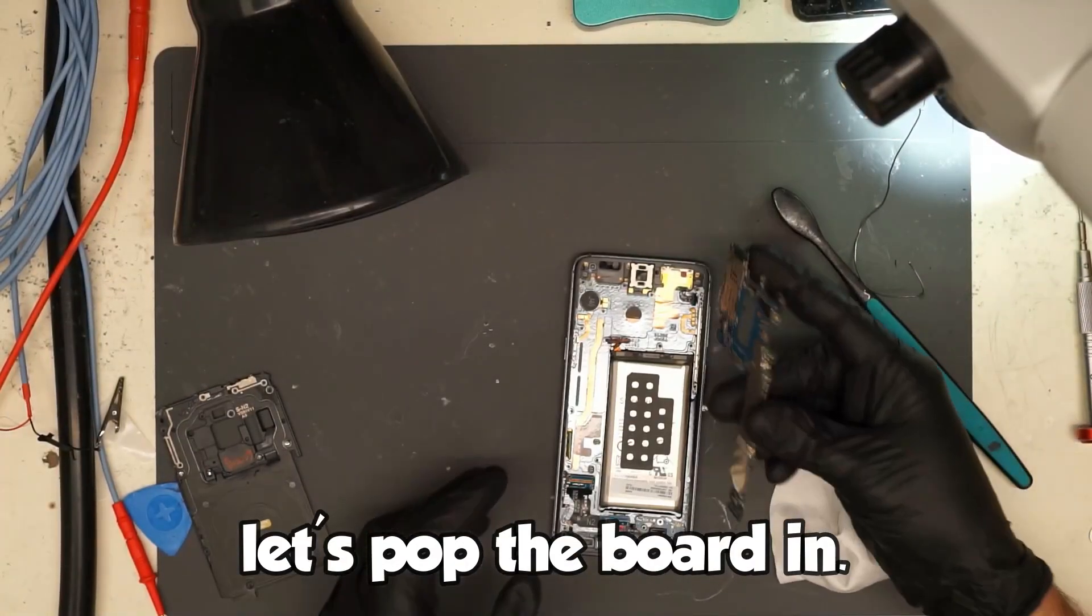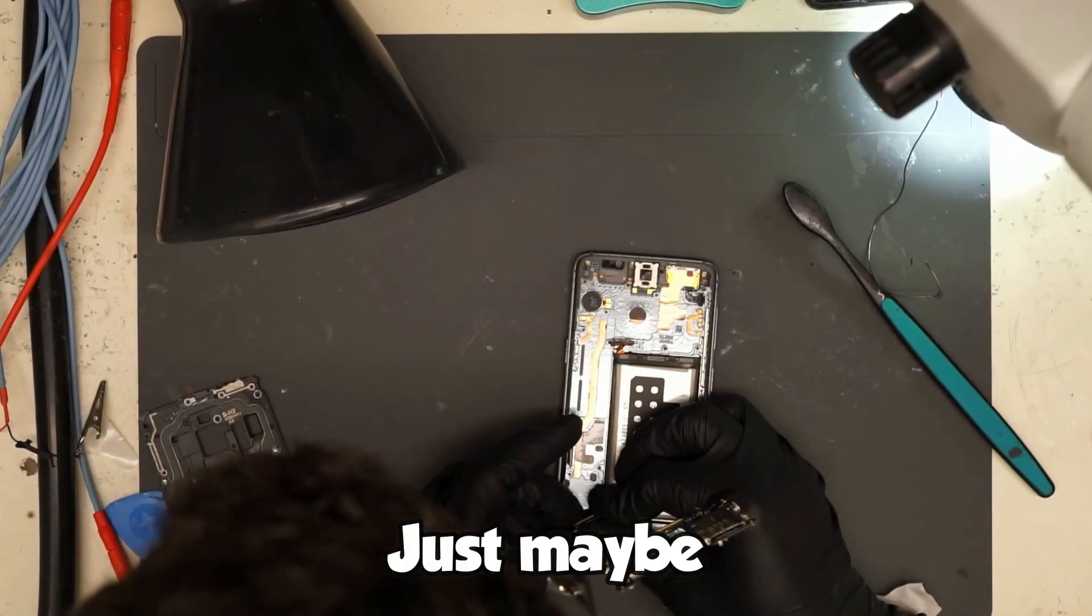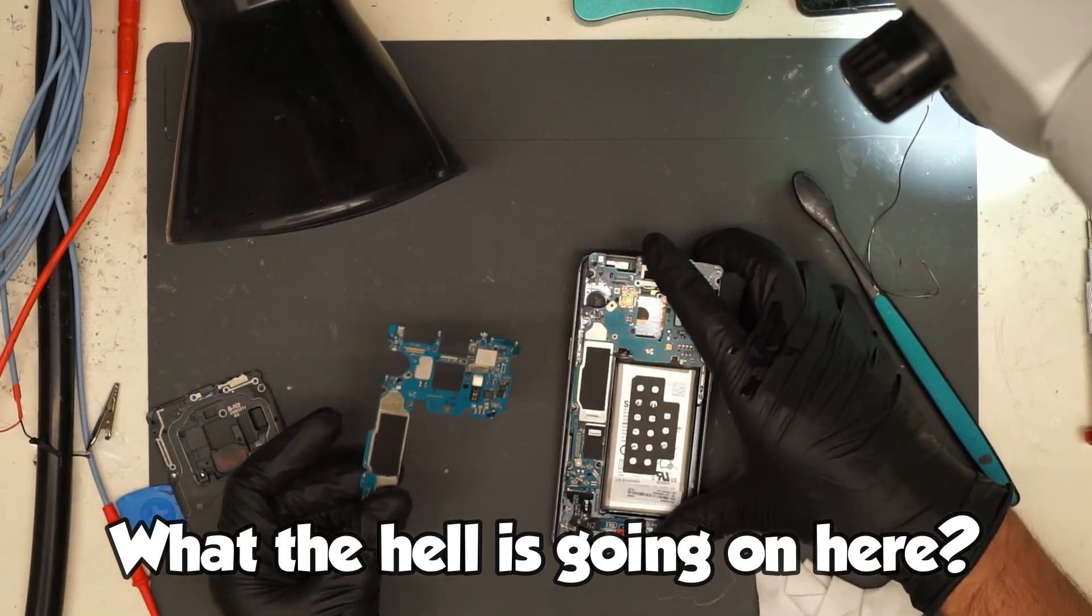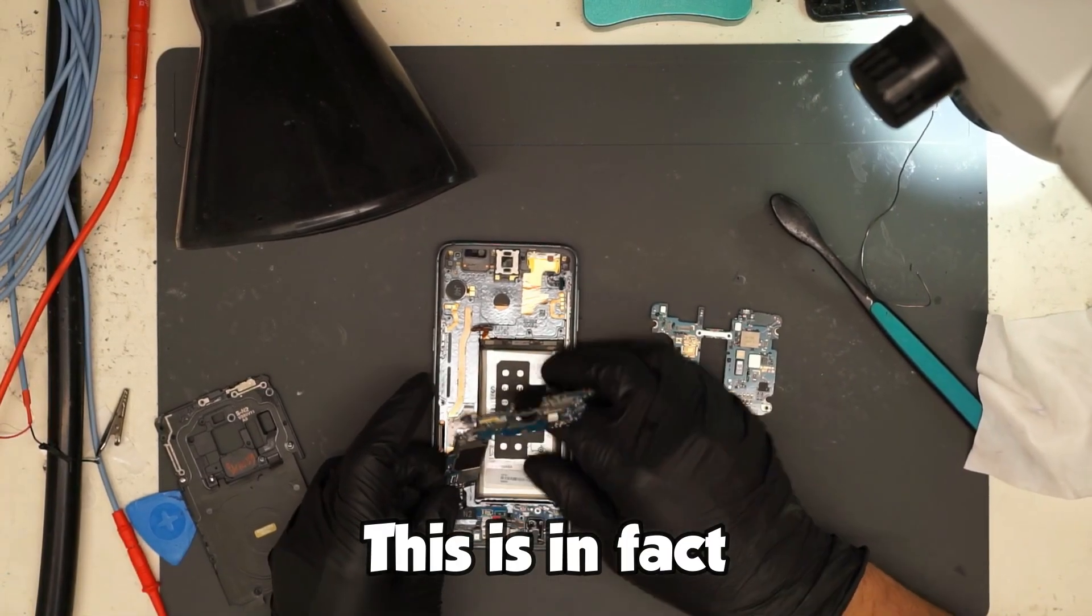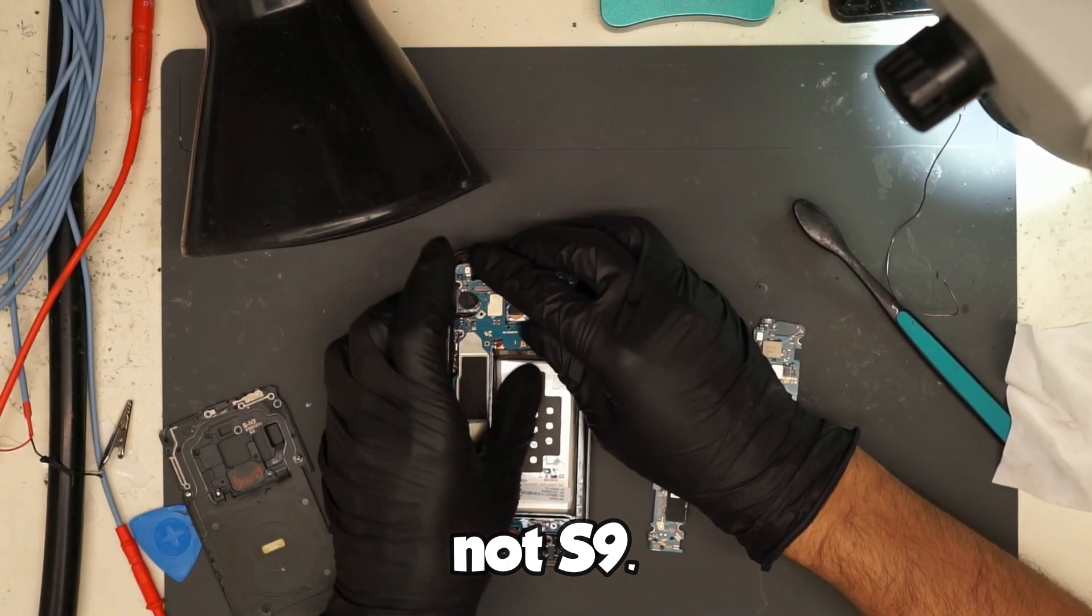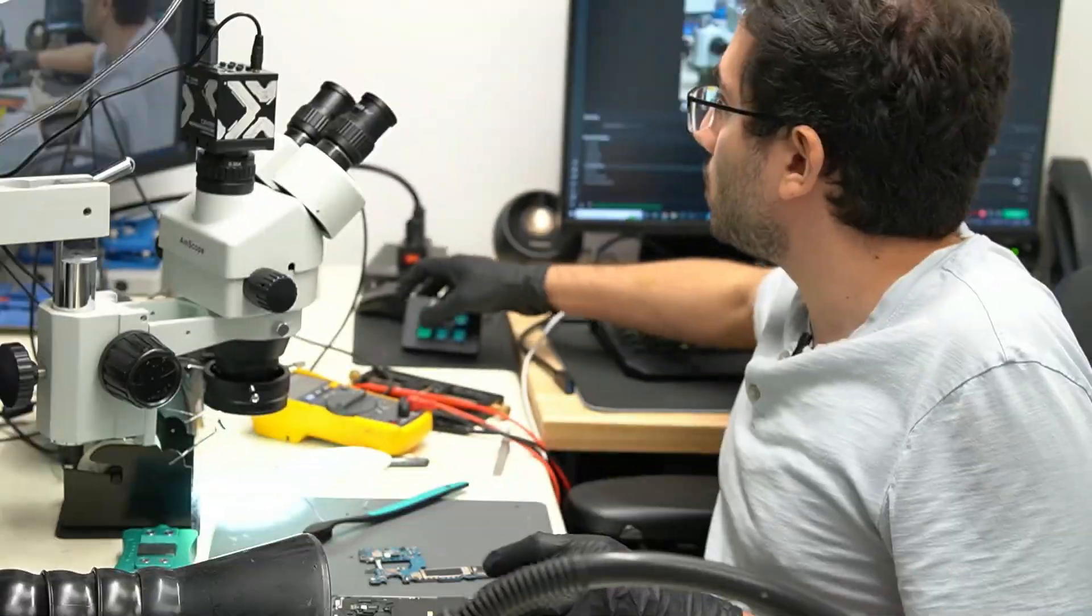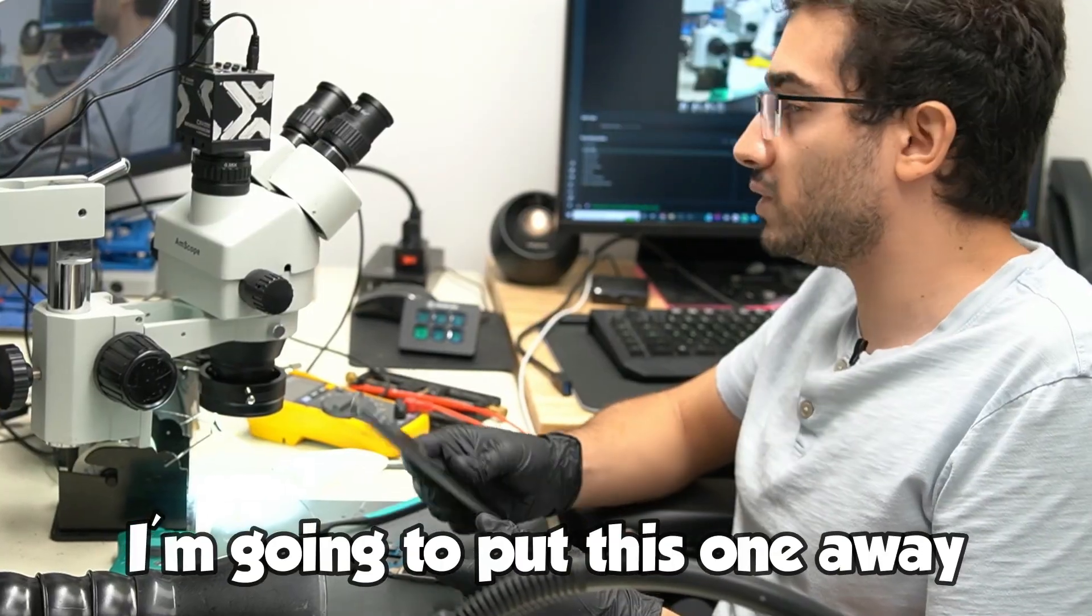So let's pop the board in, just maybe it'll turn on, but very likely it will not. What the hell is going on here? Oh no, oh hell no. This is in fact an S9 Plus board, not S9. So I need to go grab a different housing.